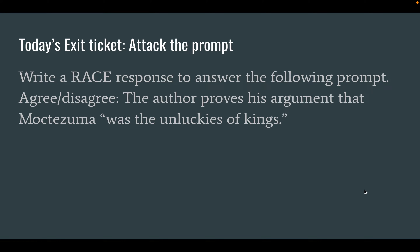Here is our exit ticket prompt. We want to know where we're headed so we can keep it in mind as we go. Today, we're going to write a RACE response that answers the following prompt: Agree or disagree — the author proves his argument that Moctezuma was the unluckiest of kings. If you want to practice this for yourself, grab some notepaper and think about what three or four steps you might take to fully answer this question. Pause the screen now and try it, then come back.